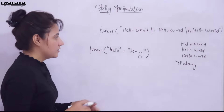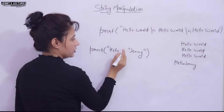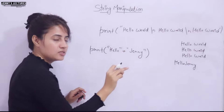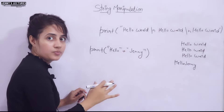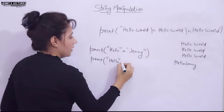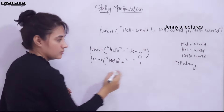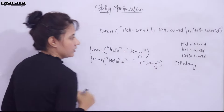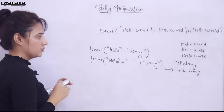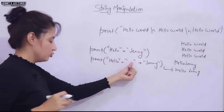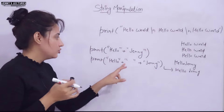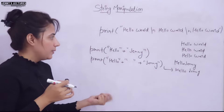If you want to add a space, there are three ways. First, you can put a space after 'hello' inside the quotes. Second, you can put a space before 'j' in 'jenny'. Third, you can do: print("hello" + " " + "jenny") — adding a space as its own individual string. The space is treated as a string, so you're concatenating three strings using the plus symbol.